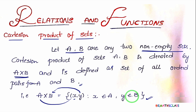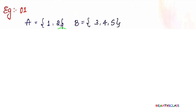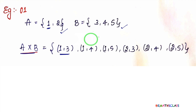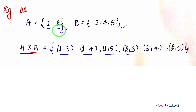You will get more clarity with this example. Set A is {1, 2} and set B is {3, 4, 5}. To calculate A cross B, take the element 1 and pair it with all elements of the second set: ordered pairs 1 comma 3, 1 comma 4, 1 comma 5. Then take element 2 and pair with all elements of the second set: ordered pairs 2 comma 3, 2 comma 4, 2 comma 5.